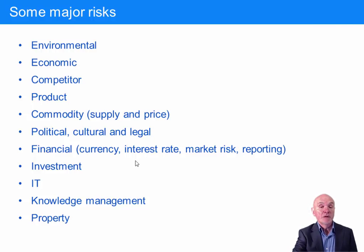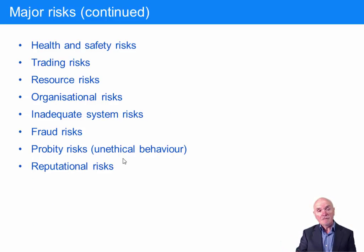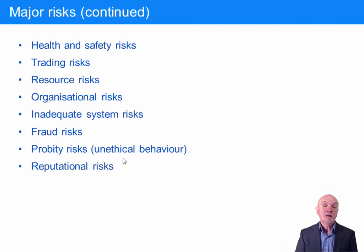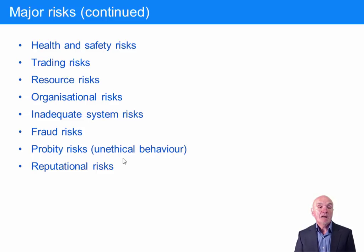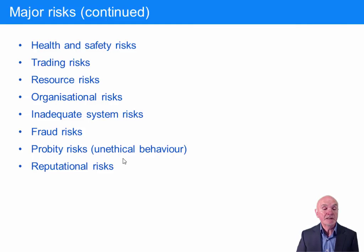Property risk: the risk that it is damaged or loses value. Health and safety: people getting hurt — mainly customers and staff. Trading risk: perhaps someone doesn't pay you, or the goods get lost in transit. Resource risks: you simply can't recruit enough people. For some professions in the UK such as engineering, there is a great shortage of some types of qualified engineer that is really holding back some companies.